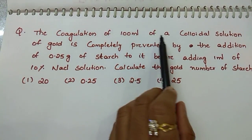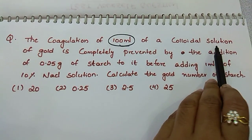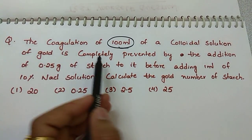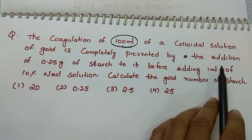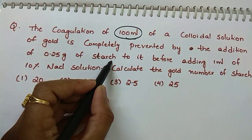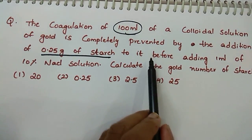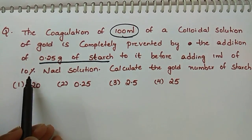The coagulation of 100 ml of a colloidal solution of gold is completely prevented by the addition of how much starch? 0.25 gram of starch to it before adding 1 ml of 10 percent NaCl solution.